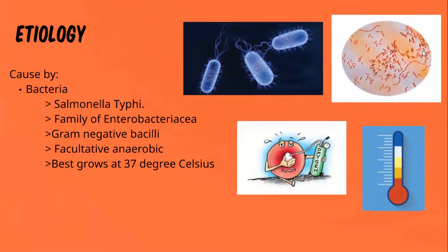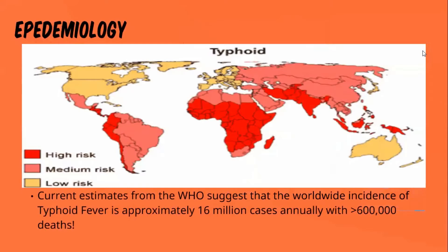Salmonella species are gram-negative and have flagella that help them move around. They are facultative anaerobes, which means they can adapt whether oxygen is present in the environment or not.